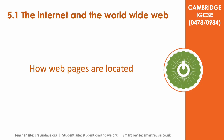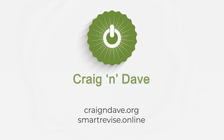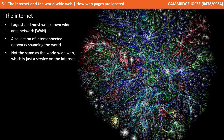In this video we're going to discuss how web pages are actually located. The internet is the largest and most well known wide area network — a collection of interconnected networks spanning the world. Remember from our previous video, this is not the same as the world wide web, which is just a service provided on the internet.